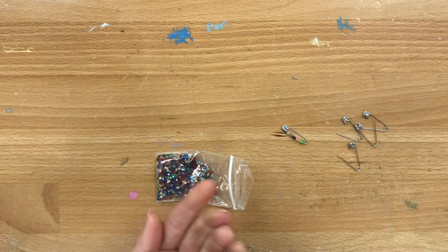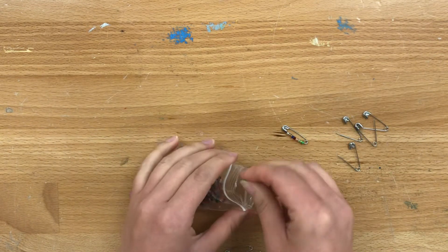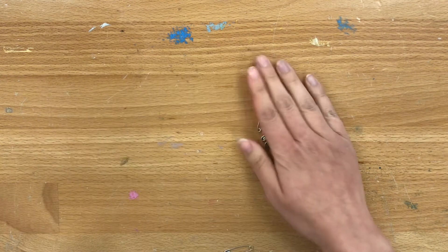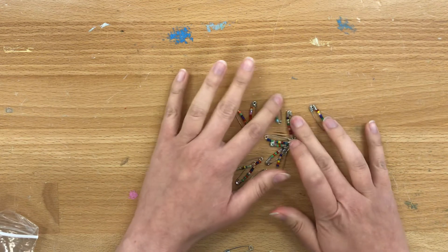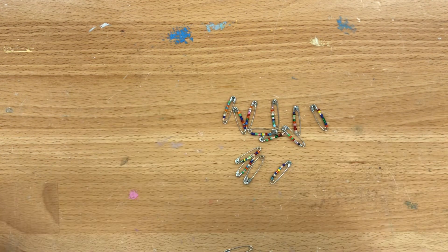So do that to all of your safety pins and then you're going to have 12 small safety pins that are all colorful and have these nice variations of beads on there and it's going to be a really pretty, really fun brooch.